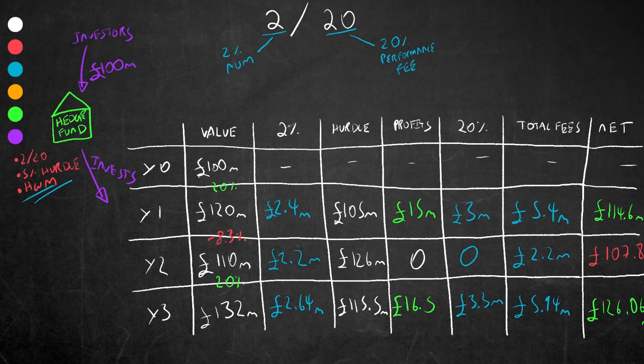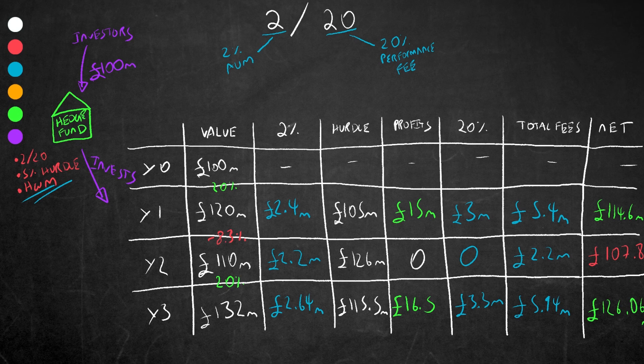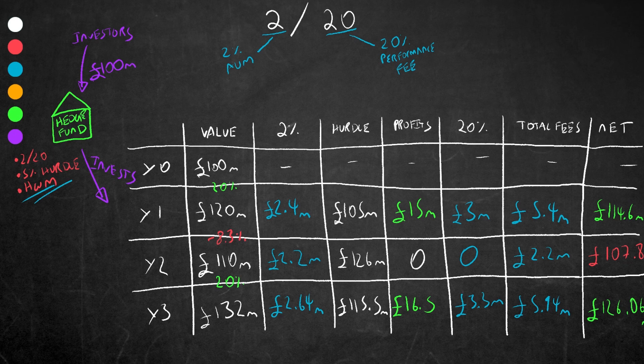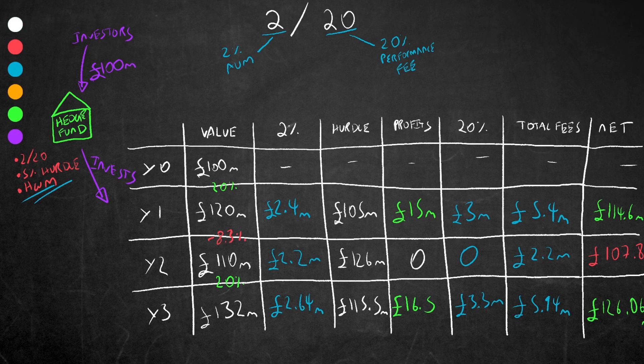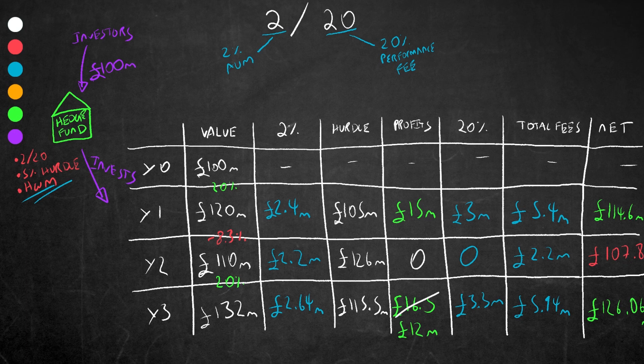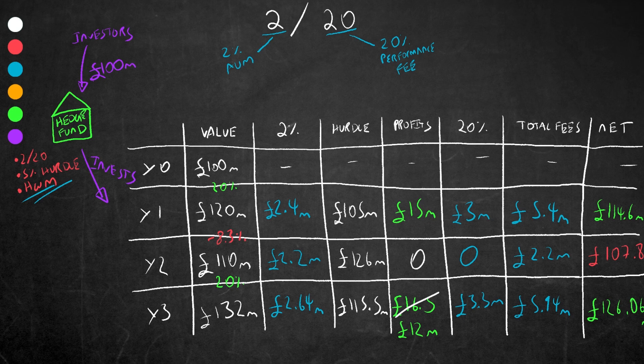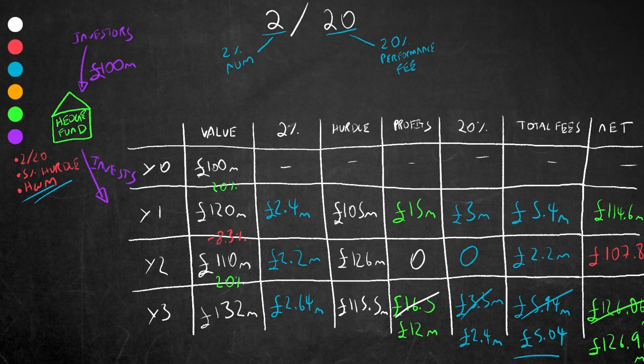In this example, the incentive fee in year three will be charged on profits made between 120 million and 132 million, not between 115.5 million and 132 million. So 20 percent of the 12 million, which is the difference between 132 and 120 million, which was the previous high watermark, is 2.4 million, leaving the net value slightly higher than if there wasn't a high watermark involved.